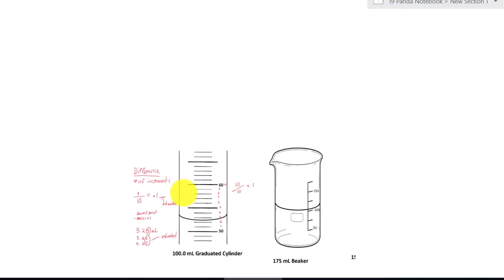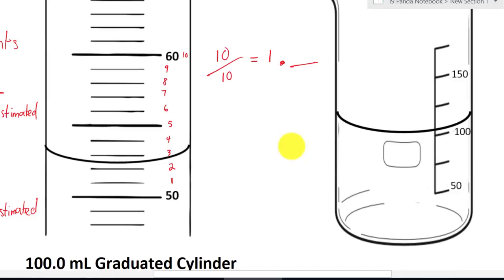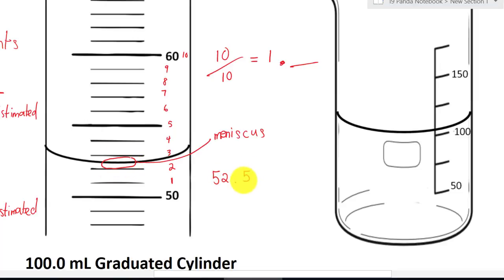Let's go back to our strategy: always end one place value smaller than the place value of its increment. This number will be in the ones place, so we need to estimate for the tenths. Looking at the water line and the lowest point — the meniscus — for sure we know it's going to be 52. The estimate is 52.5, so it can be 52.6 or 52.7. All these are correct because the last digit is estimated.